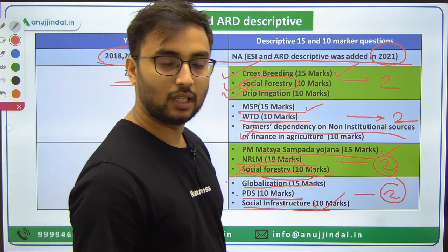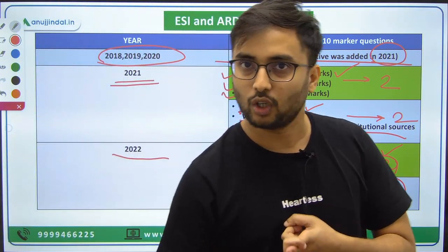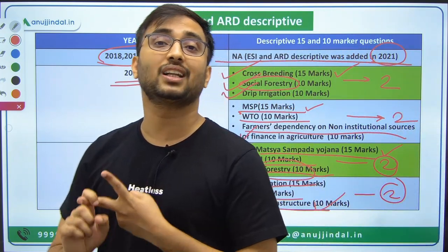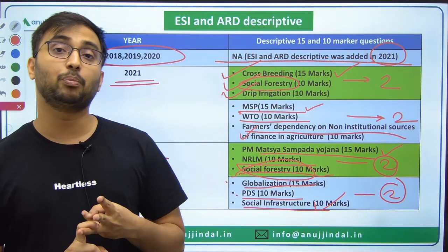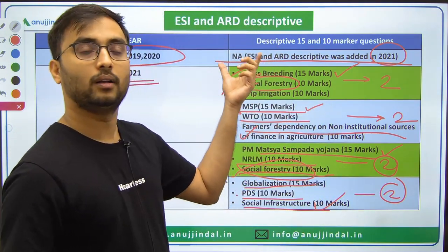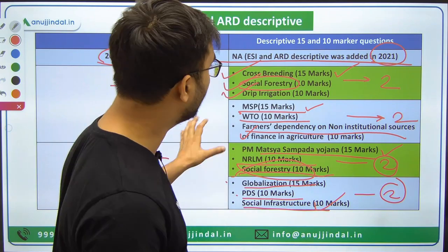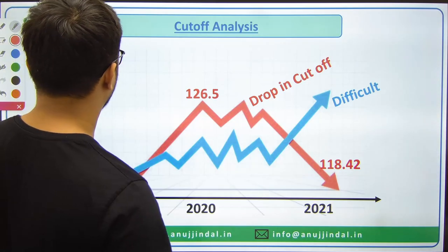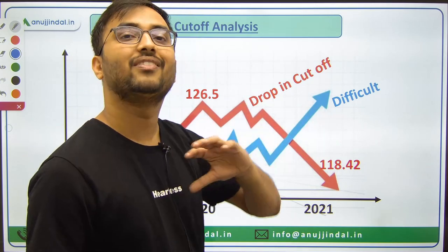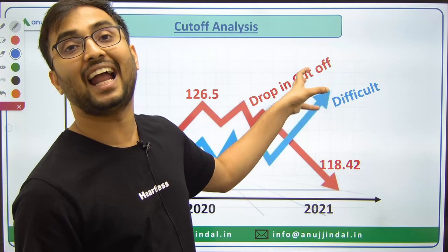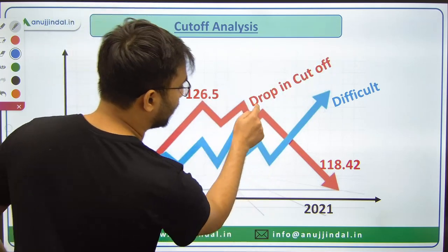By observing all descriptive questions, the key understanding is: NABARD is replicating the RBI exam pattern for ESI and ARD descriptive. Analytical questions are asked requiring conceptual clarity and answer writing practice. The structure of the answer, arguments presented, and examples backing those arguments must all be carefully included. The competition has also been increasing year by year for NABARD Grade A. The overall trend of the exam has shifted to become more analytical and dynamic, increasing difficulty and dropping cutoffs.